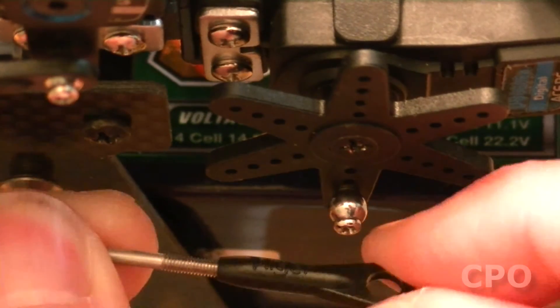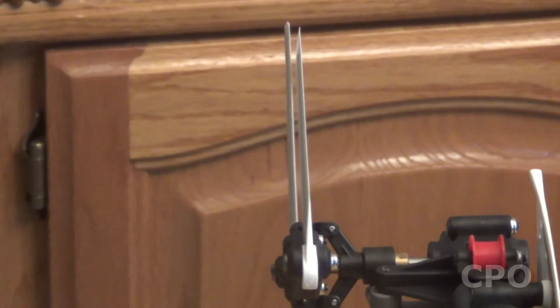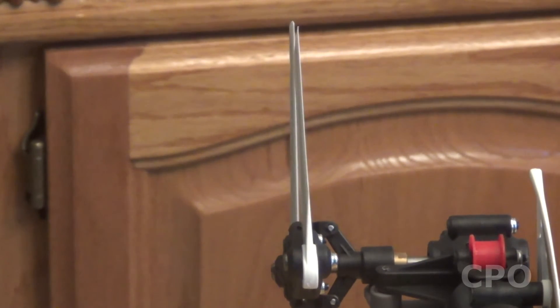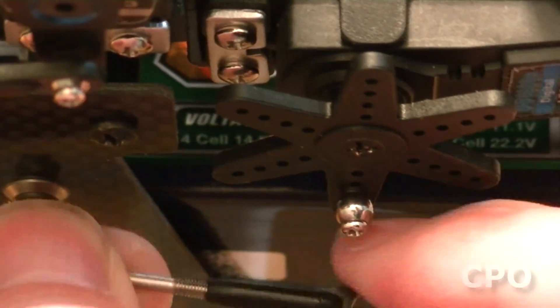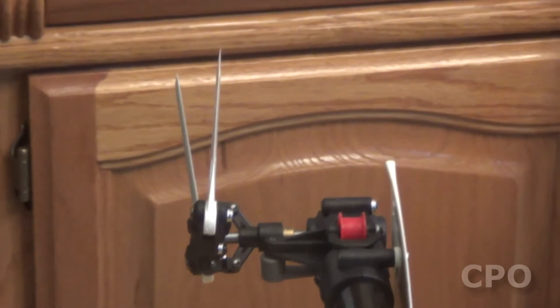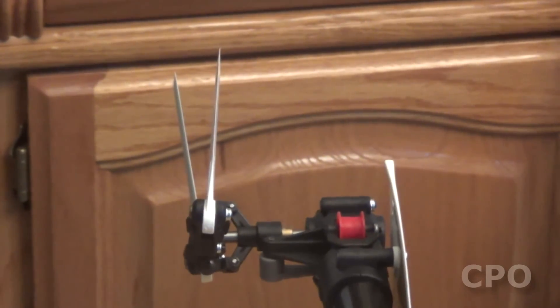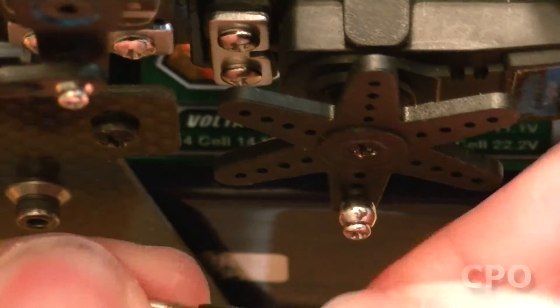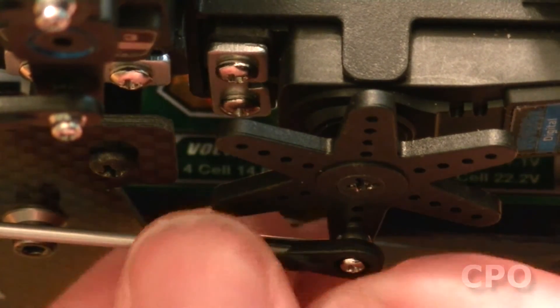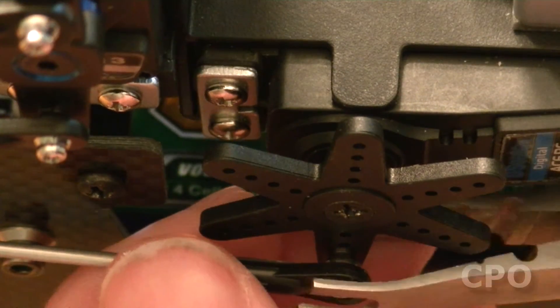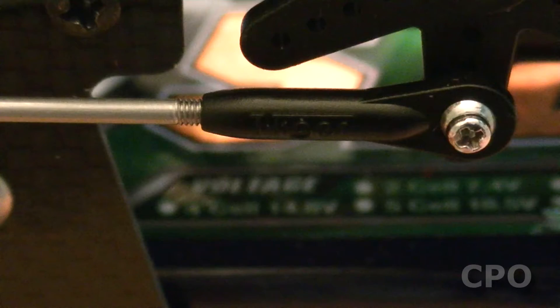All right, so now what we want to do is adjust our tail servo rod length to be ideal for our setup. And in my case, I want to set it up with about somewhere between six to eight degrees of pitch. And I'll go over that here in a second. But I'm just adjusting the length, checking to see how the pitch looks, and then tweaking it a little bit more until I get it where I think I want it. And then I'll snap it onto the ball. All right, so I'm using some ball link pliers just to snap that into place. And also make sure that the Thunder Tiger logo is facing out away from the ball. That's the proper way to put the link on the ball.